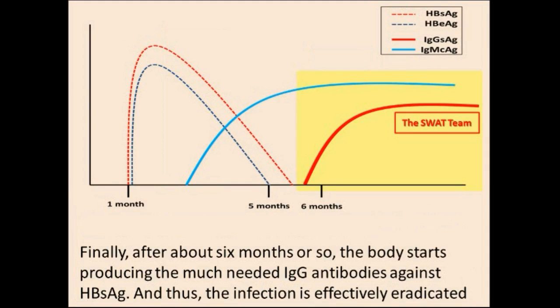Finally, after about 6 months or so, the body starts producing the much-needed IgG antibodies against hepatitis B surface antigen, and thus the infection is effectively eradicated.